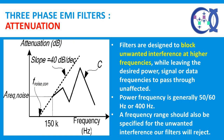Attenuation or insertion loss is a crucial parameter for defining the filter. Filters are designed to block unwanted interference at higher frequencies, while leaving the desired power, signal, or data frequencies to pass through unaffected. In the case of power line filters, the power frequency is generally 50, 60 hertz or 400 hertz, and only filters that match the designated frequency of your system should be used. A frequency range should also be specified for the unwanted interference our filters will reject.